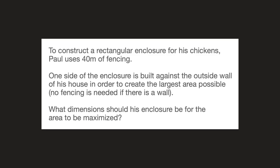We're told that to construct a rectangular enclosure for his chickens, Paul uses 40 meters of fencing. One side of the enclosure is built against the outside wall of his house in order to create the largest area possible. No fencing is needed if there is a wall. We're then asked what dimensions should his enclosure be for the area to be maximized.